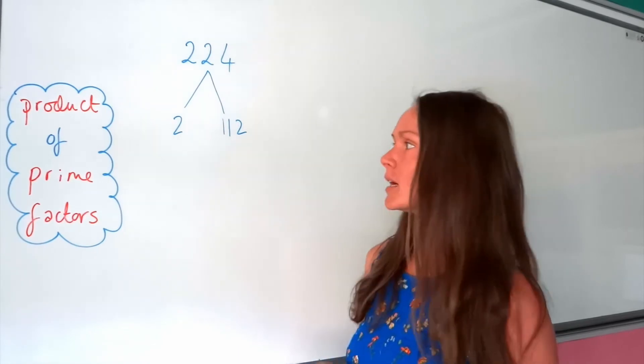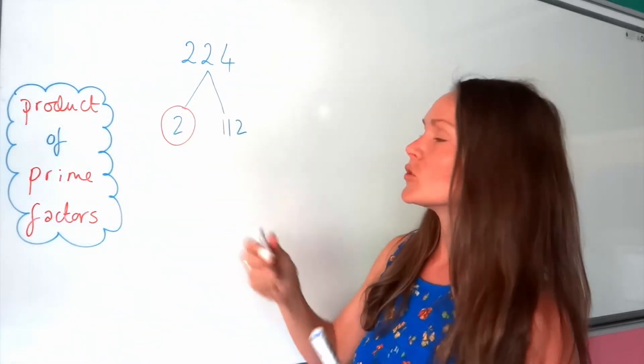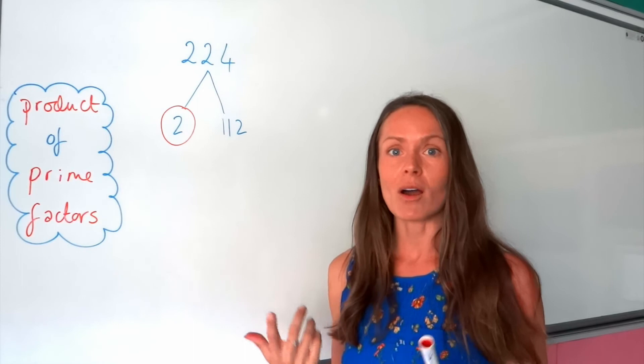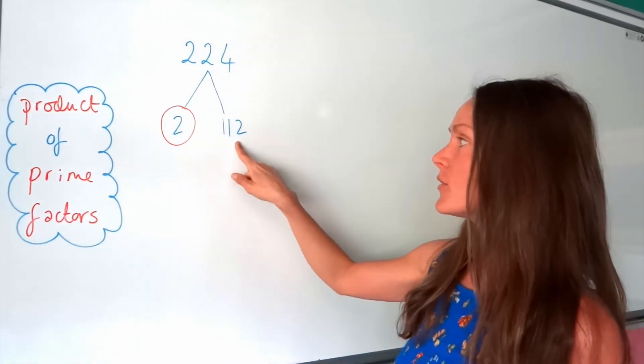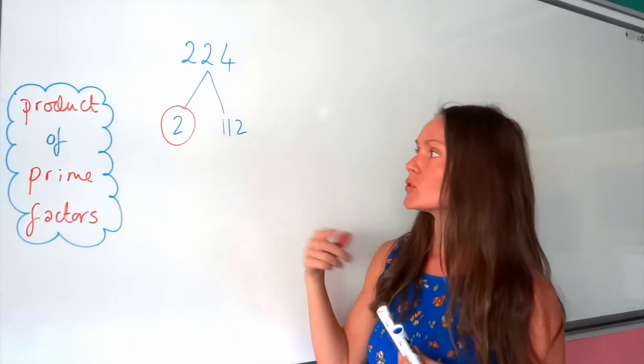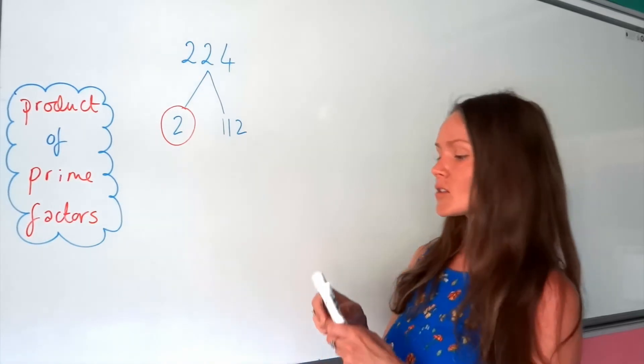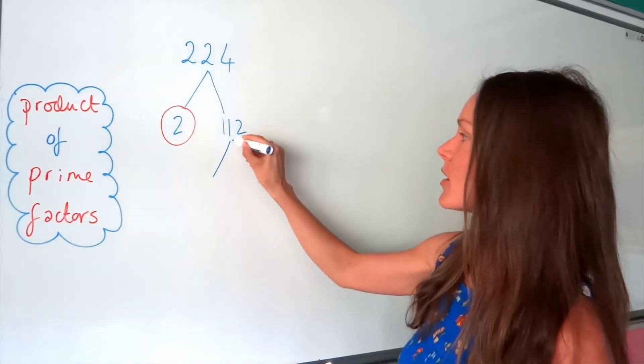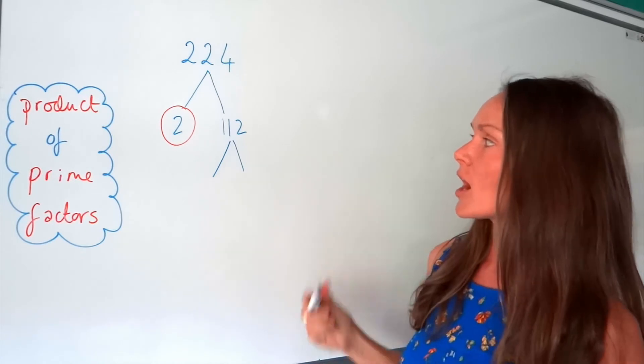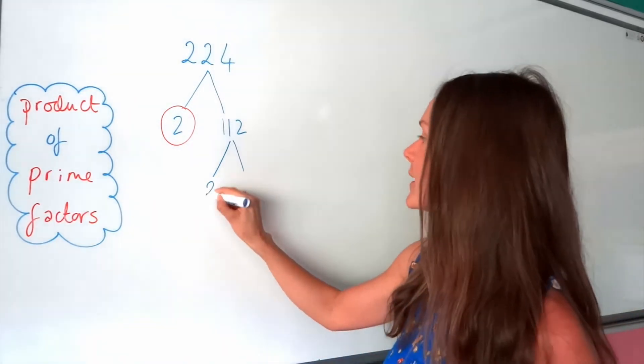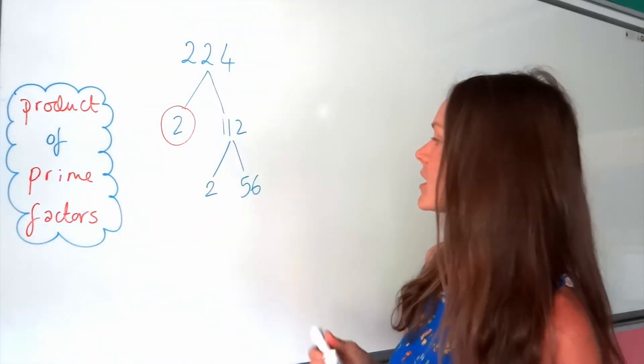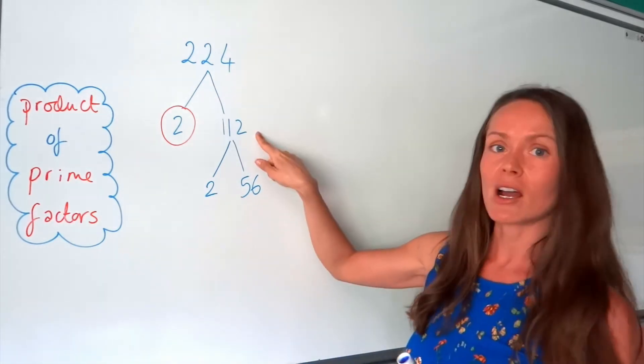One of these is a prime number, the number 2, because 2 only has two factors, one in itself. This one, however, is divisible by 2. So it's definitely not a prime number. So I'm going to continue my branches in my factor tree. So if I divide 112 by 2, I get 56. So 2 times 56 gives me 112.